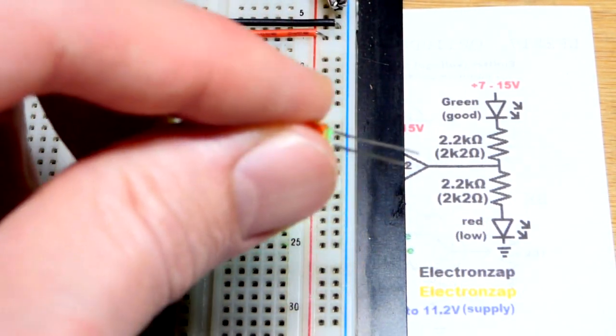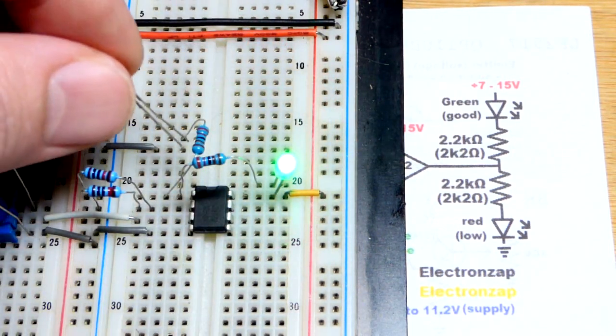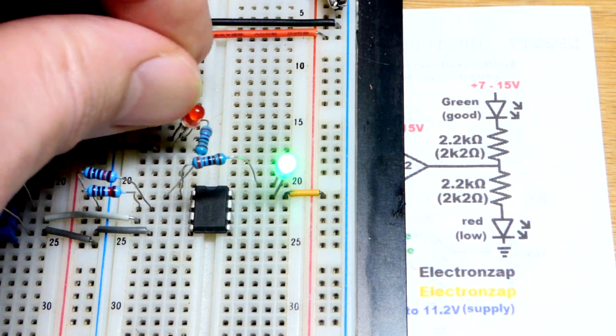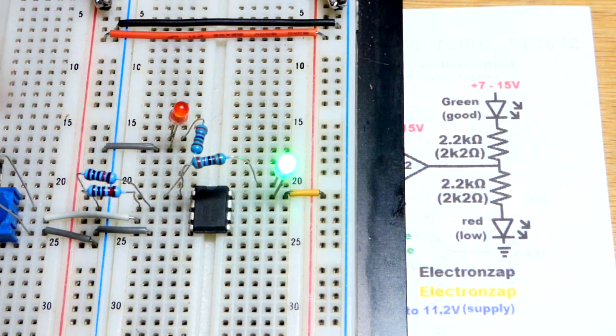The red LED, so the long lead, the anode, is coming from the output, the resistor. The cathode going down one row to this gray jumper that goes to the negative side of the power supply, ground.